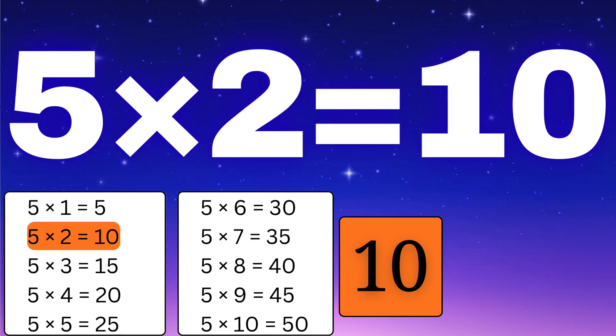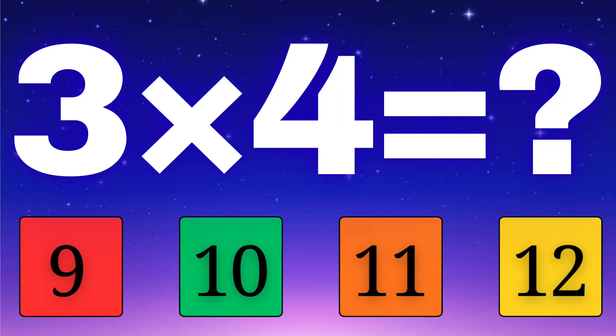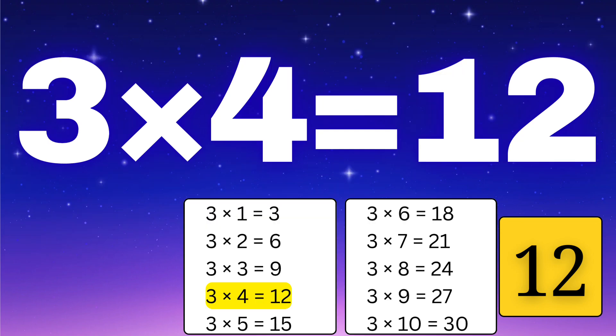Now for the last question — what is three times four? Let's check the options: is it nine, ten, eleven, or maybe twelve? Think carefully. The correct answer is twelve. Wow, great job, little mathematician — three times four equals twelve.